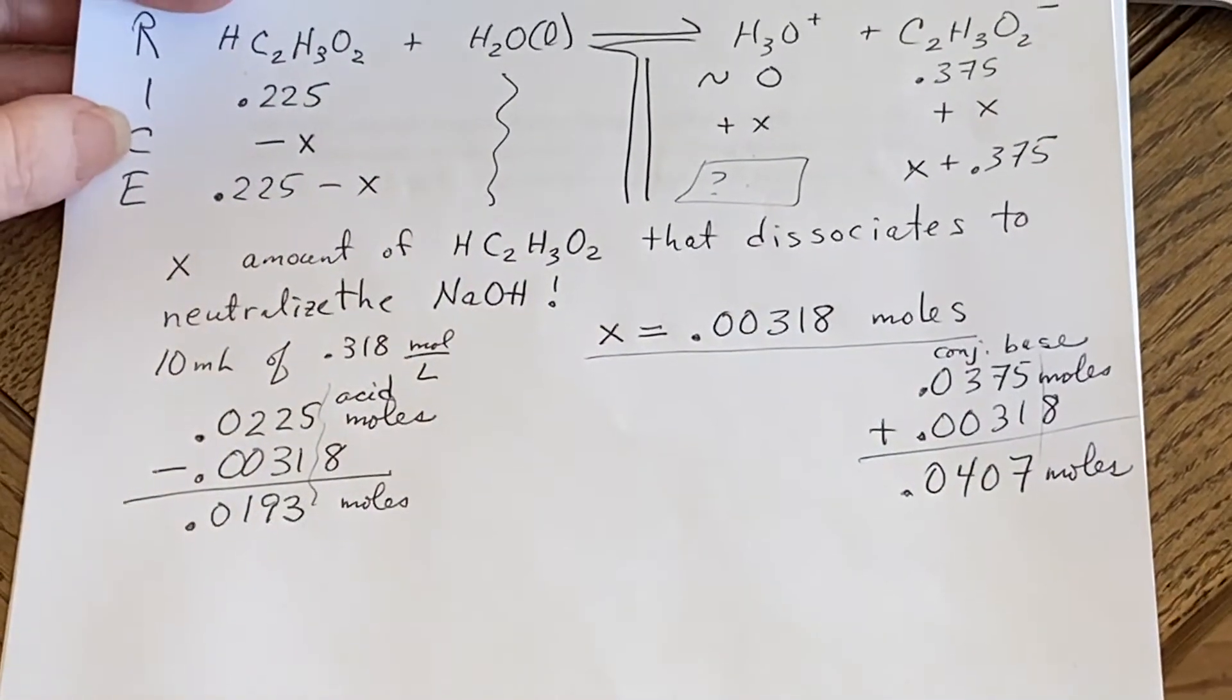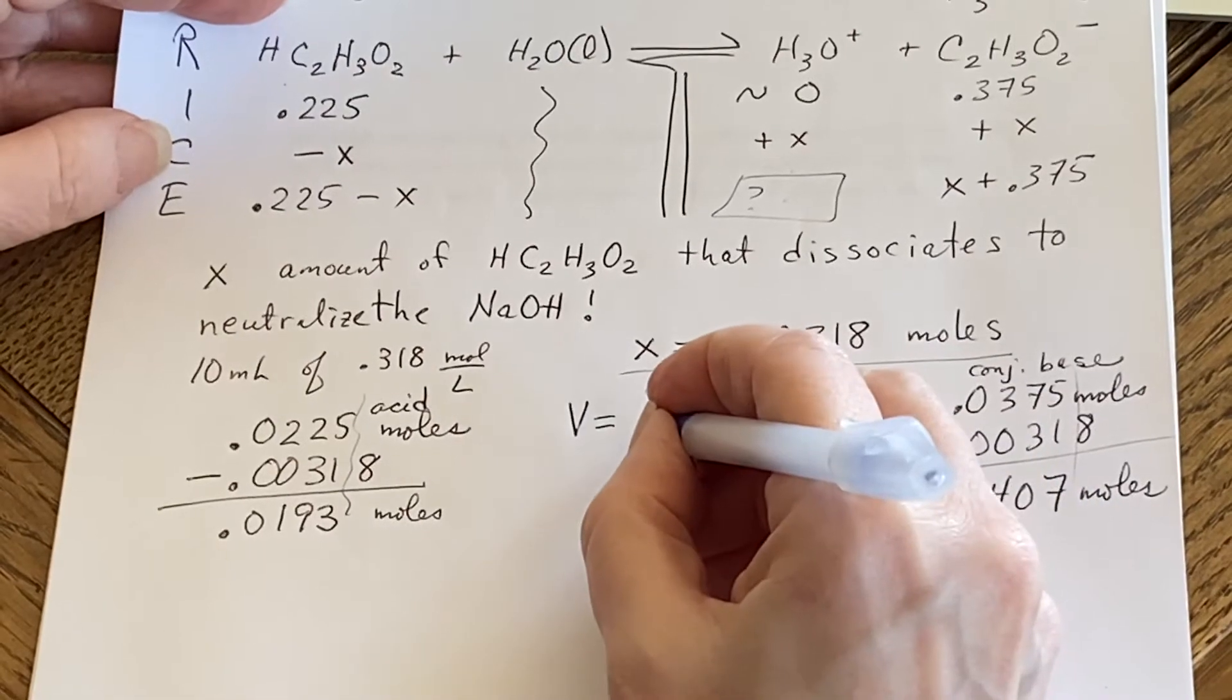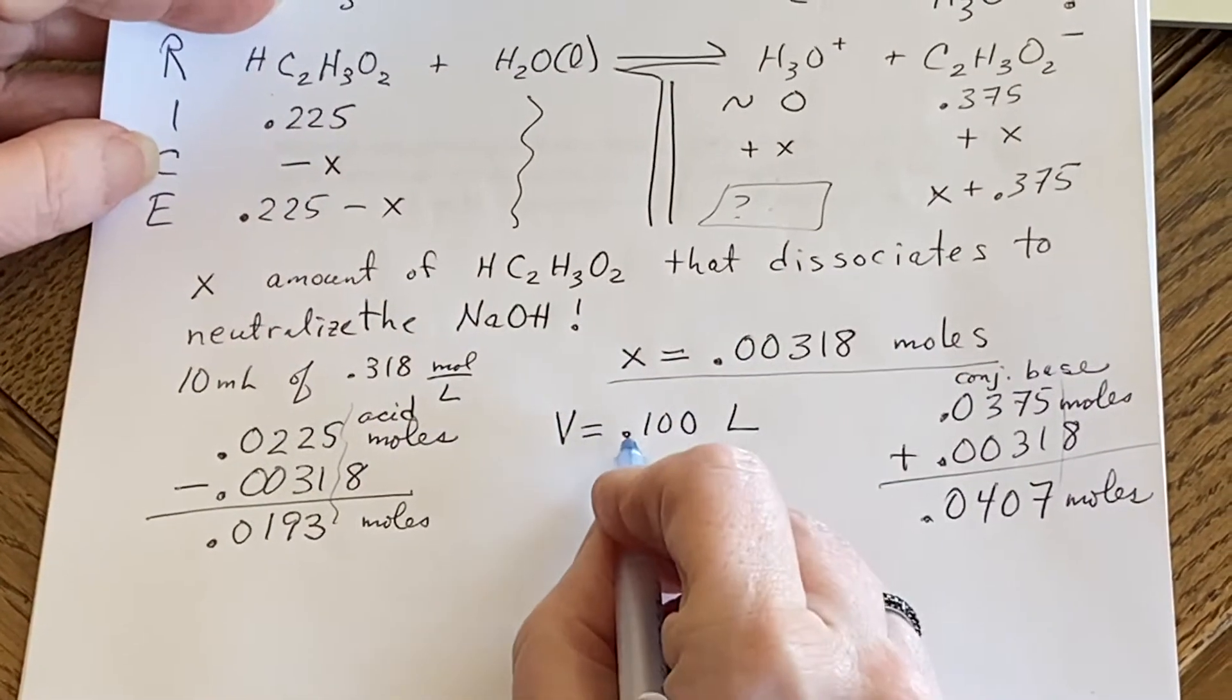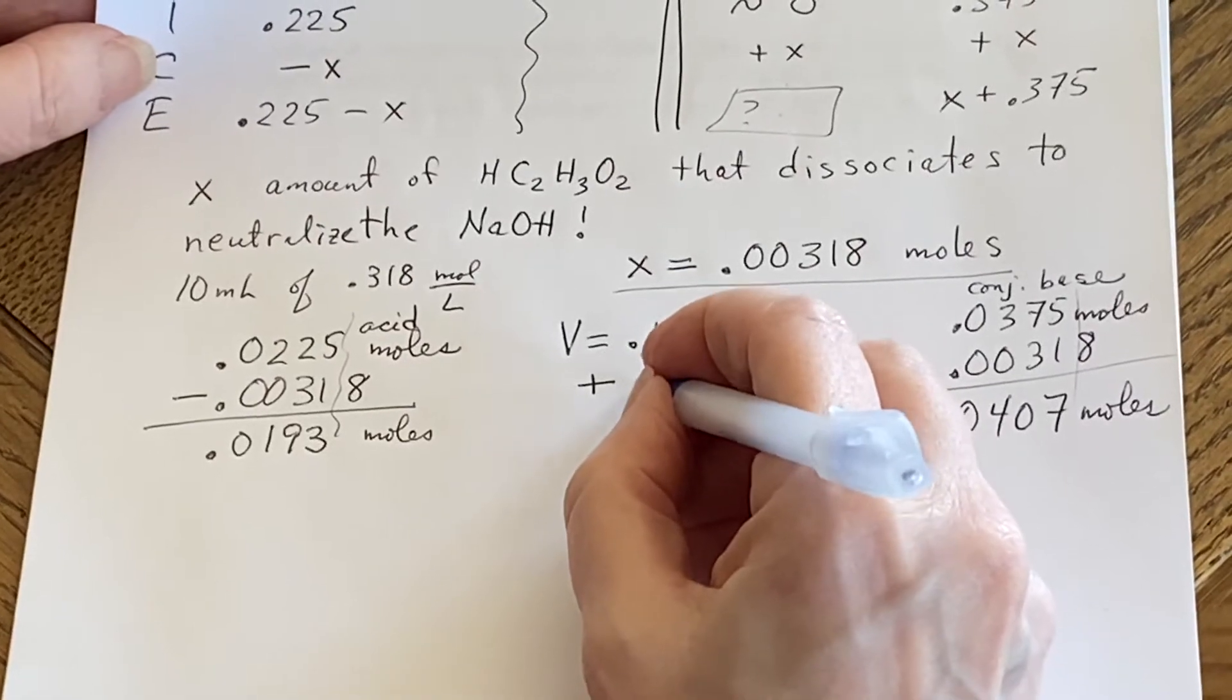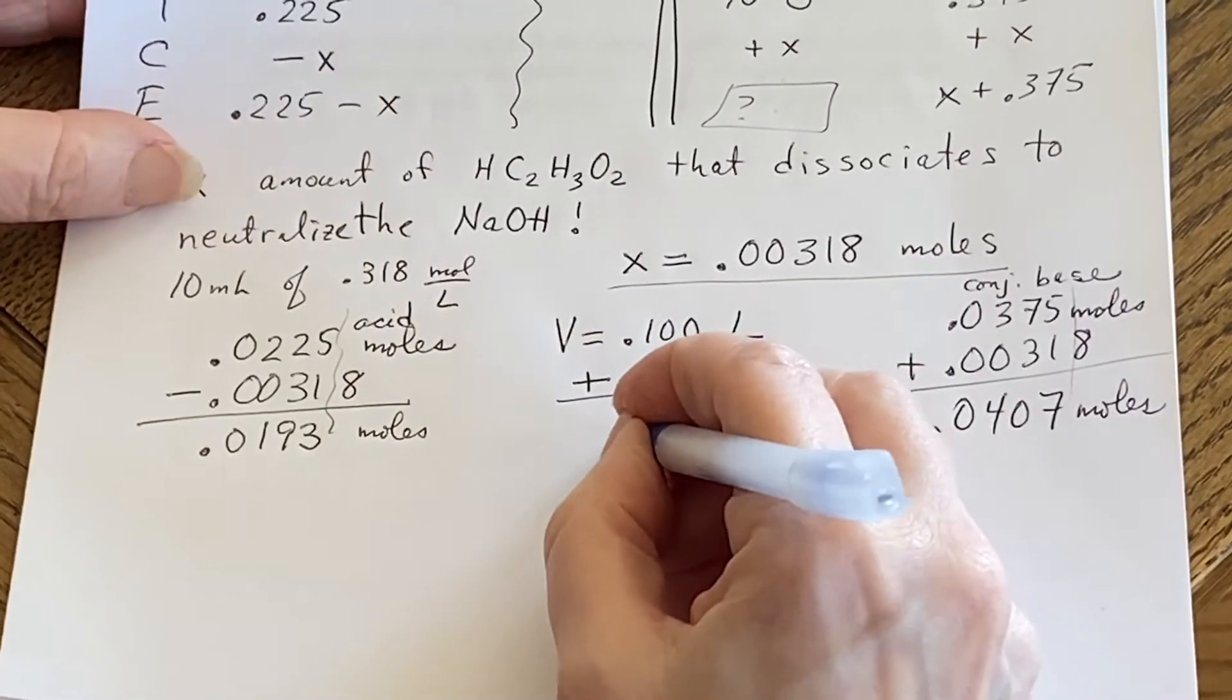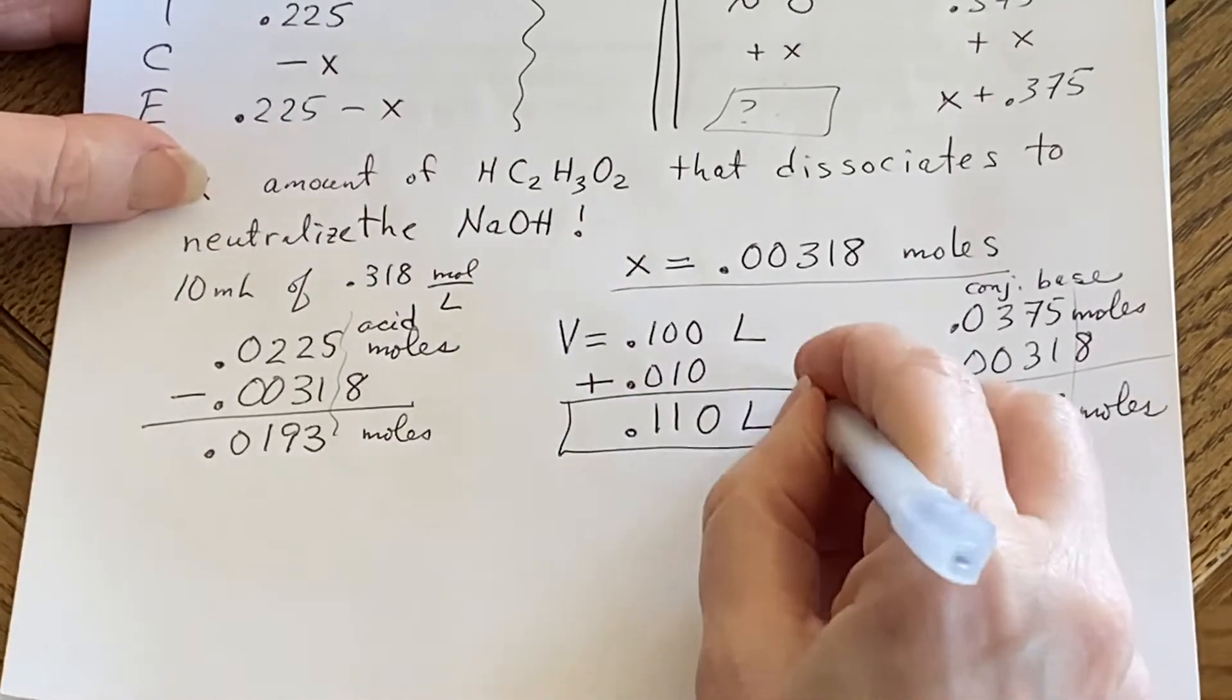That's the number of moles. But what's the volume now? The volume used to be 0.100 liters. I've changed that from the 100 milliliters. But I just got through adding another 10 milliliters of liquid. So I'm going to be adding this. And in terms of liters, I now know that this is my new volume.